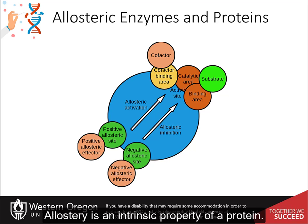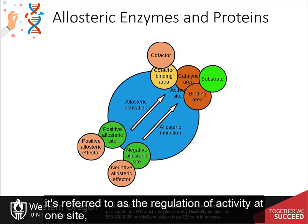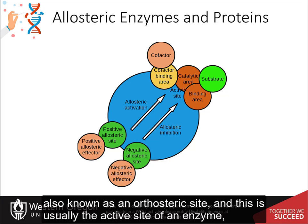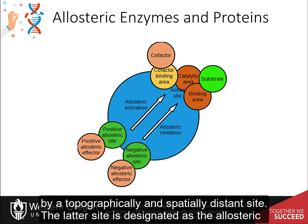Allostery is an intrinsic property of a protein. It's referred to as the regulation of activity at one site, also known as an orthosteric site — usually the active site of an enzyme — by a topographically and spatially distant site.